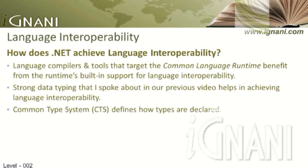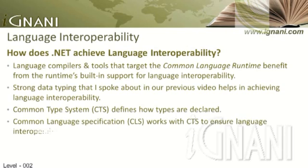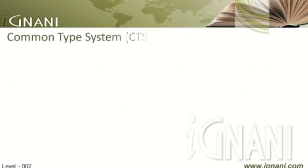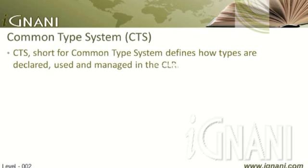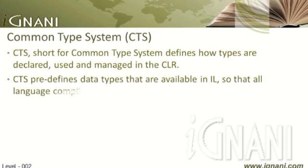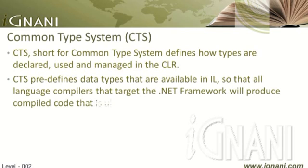Common Type System (CTS) defines how types are declared. Common Language Specification (CLS) works with CTS to ensure language interoperability. .NET solves the data type mapping problem by using the Common Type System. CTS defines how types are declared, used, and managed in the CLR. The CTS pre-defines data types available in IL, so that all language compilers targeting .NET framework will produce compiled code ultimately based on these types.